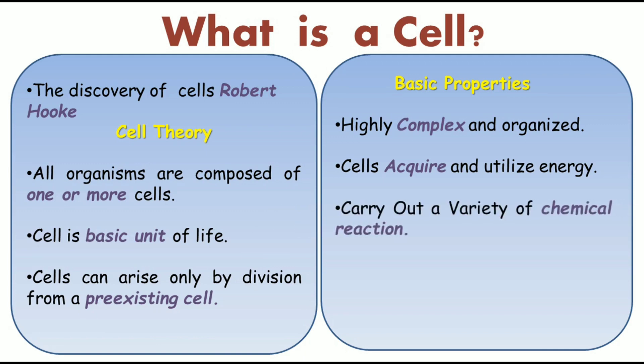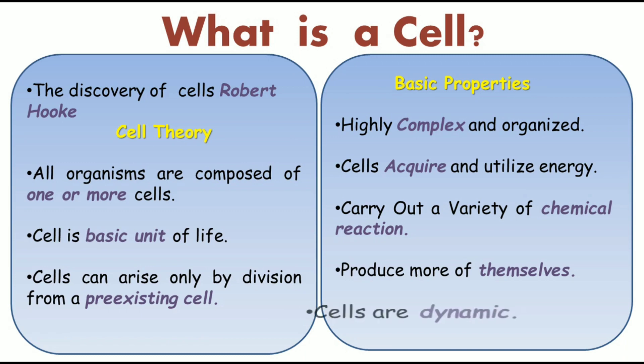In every cell there are thousands of chemical reactions ongoing at the same time, like modifications of carbohydrates or proteins, removing or adding a functional group. Cells can also produce more of themselves — they have the capability to generate from one cell to two, four, six, eight. Cells are also dynamic: they can change their shape, migrate from one area to another, and respond to their environment.